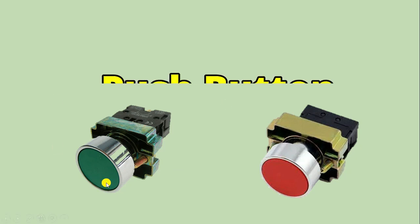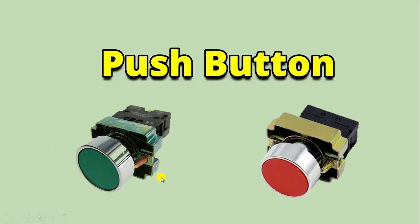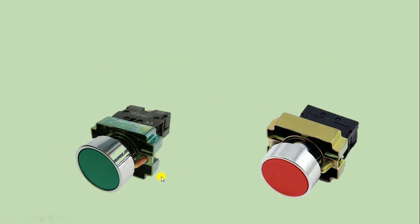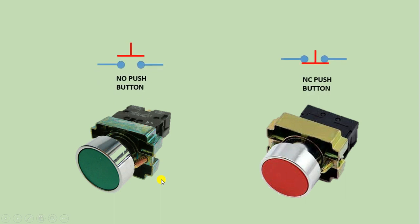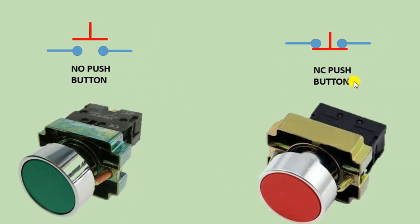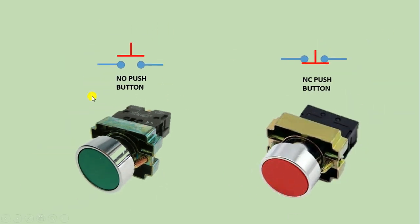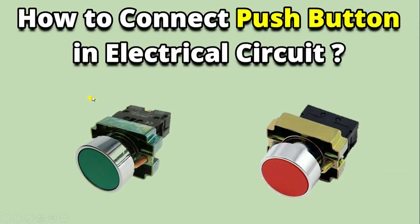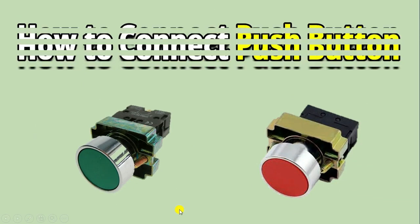Push buttons used in electrical circuits are normally of two types. The first one is the NO (Normally Open) push button, and the second is the NC (Normally Closed) push button. Now let's understand where and how you have to use these two push buttons.